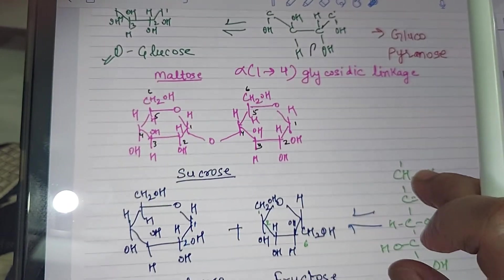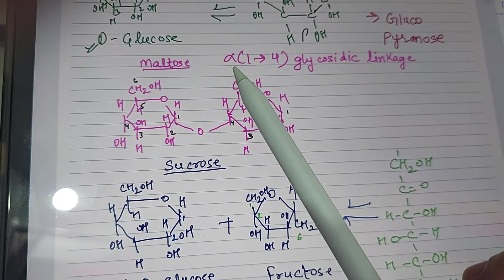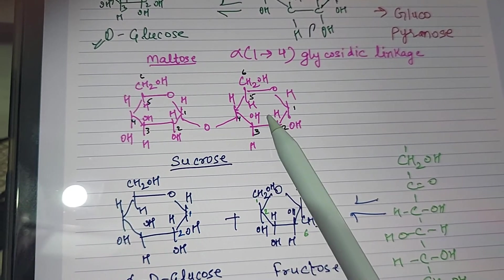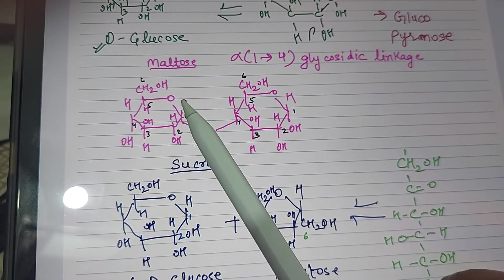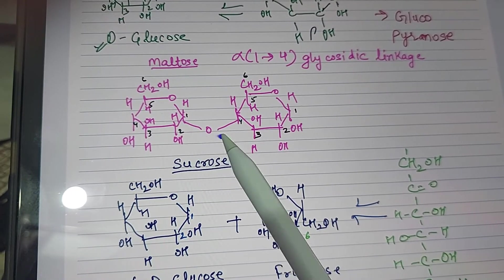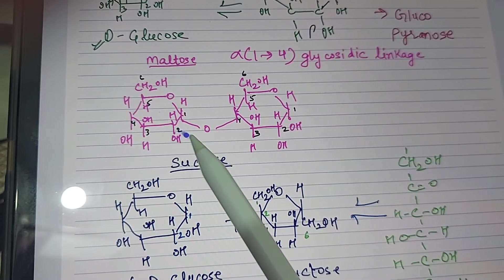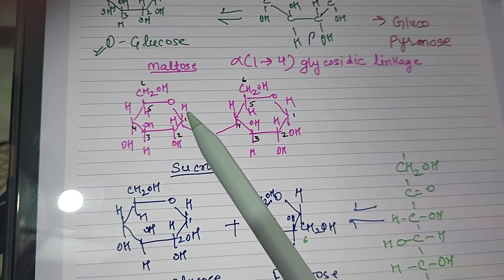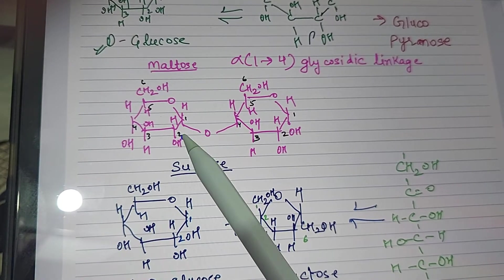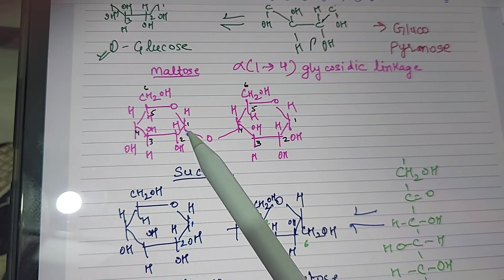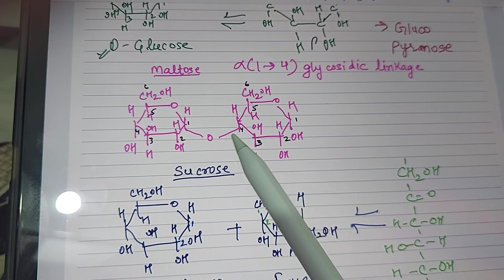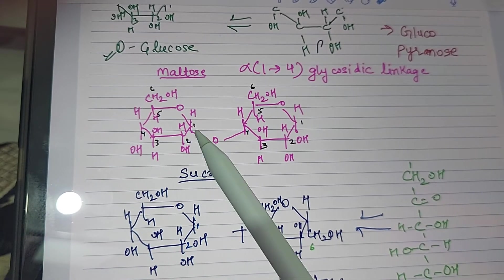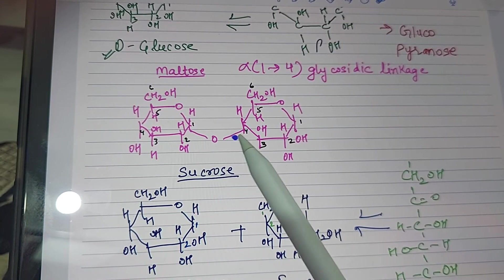Maltose has an alpha-1,4 glycosidic linkage — one glucose molecule combines with another glucose molecule with the help of an alpha-1,4 glycosidic linkage. This is called alpha-1,4 because the OH of this glucose and the OH of the other glucose are both at the bottom.